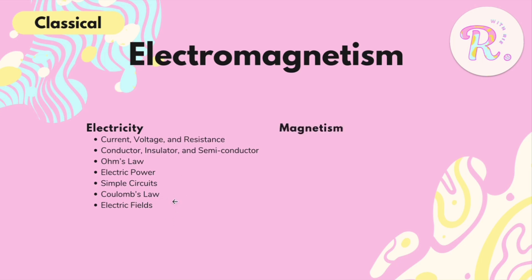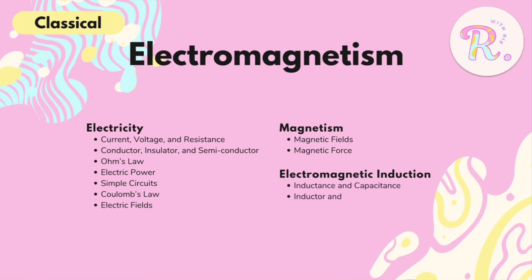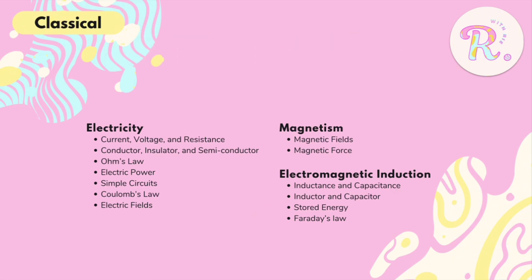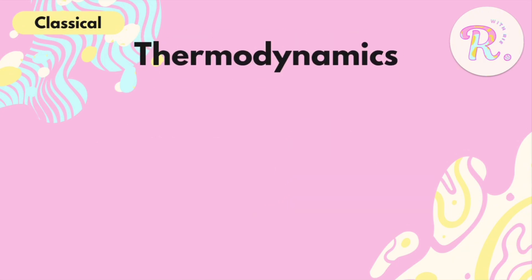We also have Coulomb's Law and electric fields. For magnetism, we cover magnetic fields and magnetic force — just the basic concepts. Lastly for electromagnetism, we have electromagnetic induction: inductance and capacitance, which are kind of like sisters to voltage and resistance, as well as the energy stored in inductors and capacitors and their formulas, and Faraday's Law.